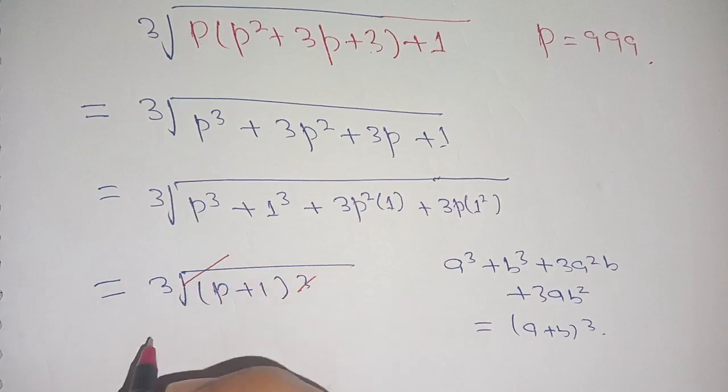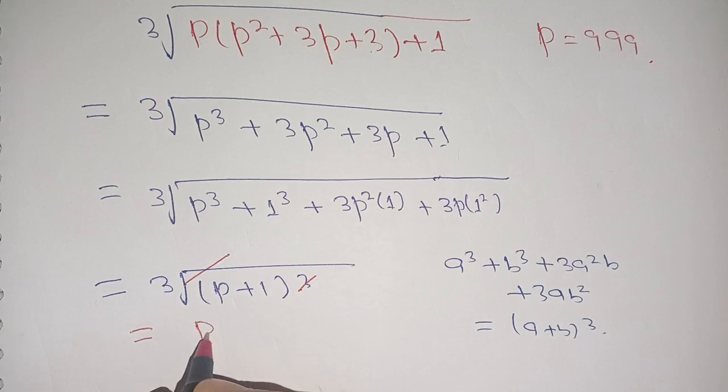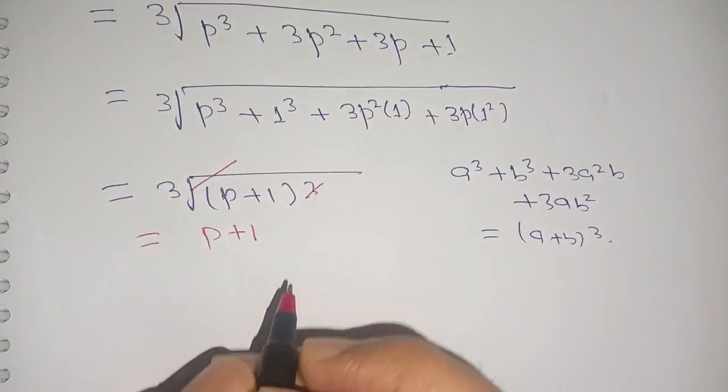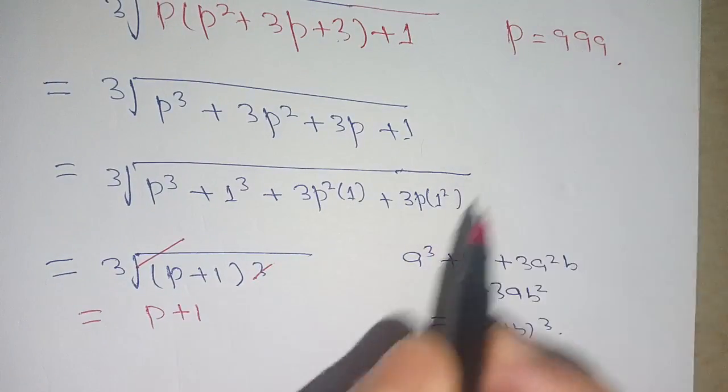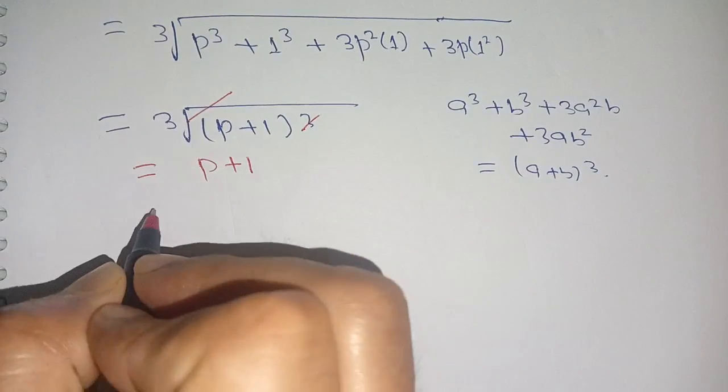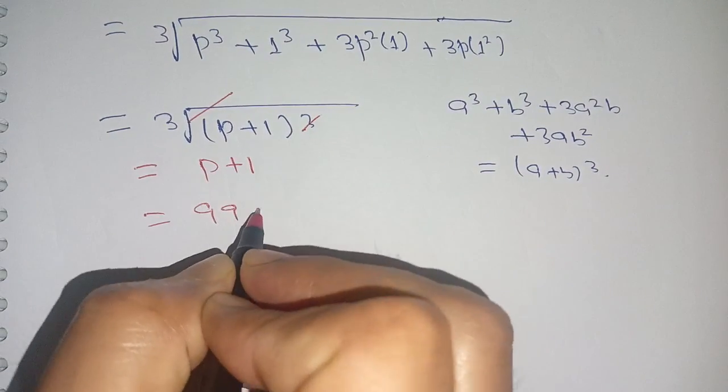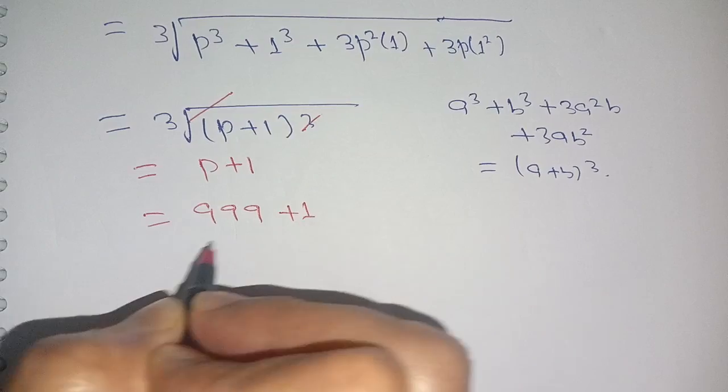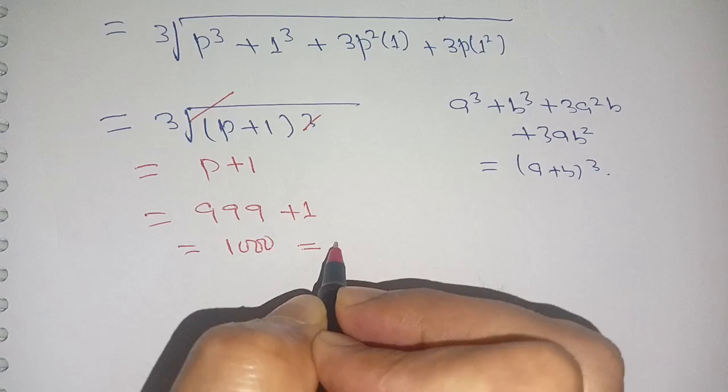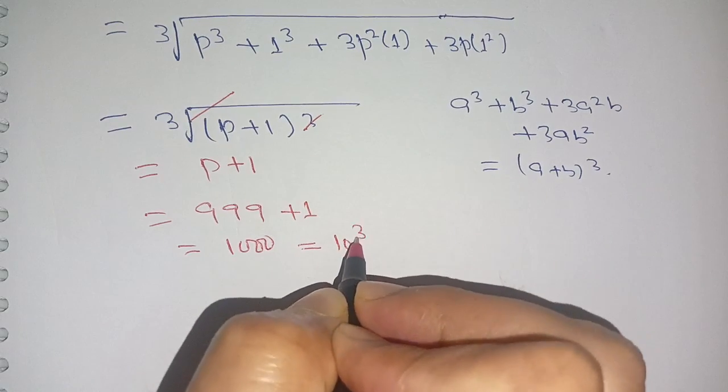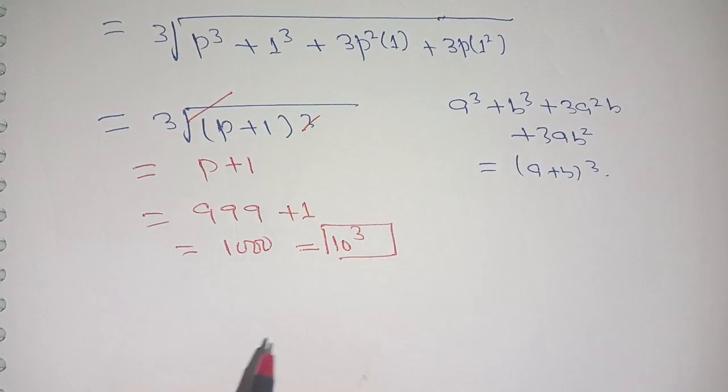Now in place of p we substitute p equals 999. We get 999 + 1 equals 1000, which means 10³. Thus this is the required value of this problem.